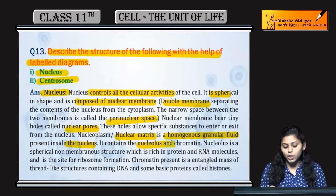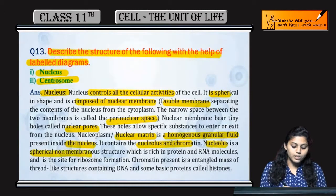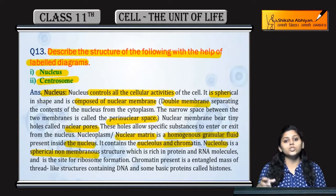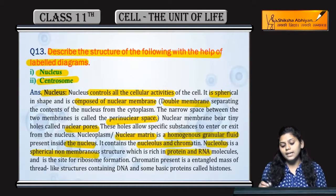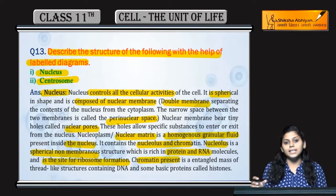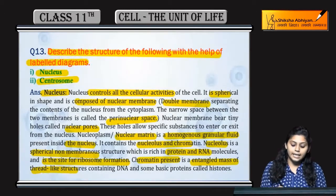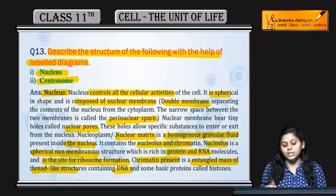Is mein kya present hota hai? Nucleolus and chromatin. Jo nucleolus hai, vo spherical non-membranous structure hai, which is rich in protein and RNA molecules. It is also a site for ribosome's formation. Chromatin jo present hai, that is present in an entangled mass of thread-like structures, which contains DNA aur kuch basic proteins such as histones.